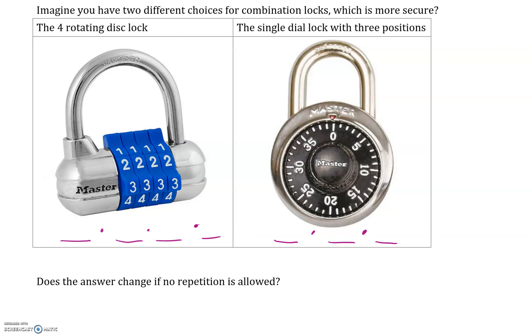So on this one, we have ten choices, every number from zero to nine. So we have ten choices, ten choices, ten choices, ten choices, so we have ten thousand different combinations. Not bad, not bad at all.